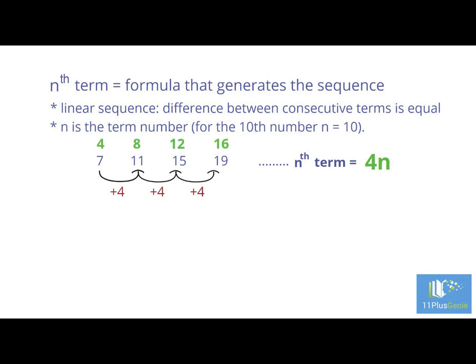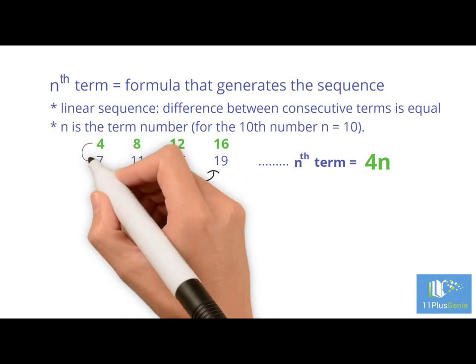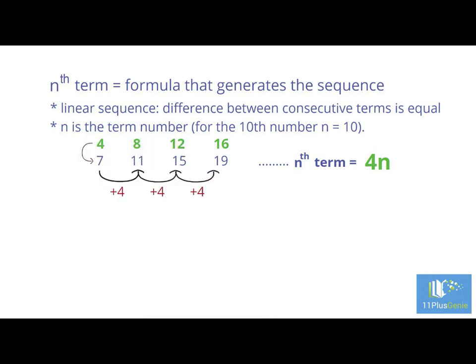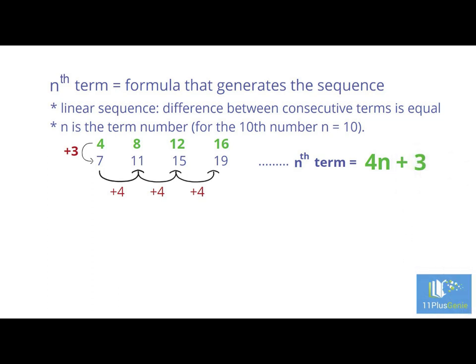Above the given sequence write down the 4 times table. What must we do to each term of the 4 times table to get the given sequence? We must add 3 to the 4 times table. The Nth term for the sequence is 4N plus 3. Just remember that N is the term number.